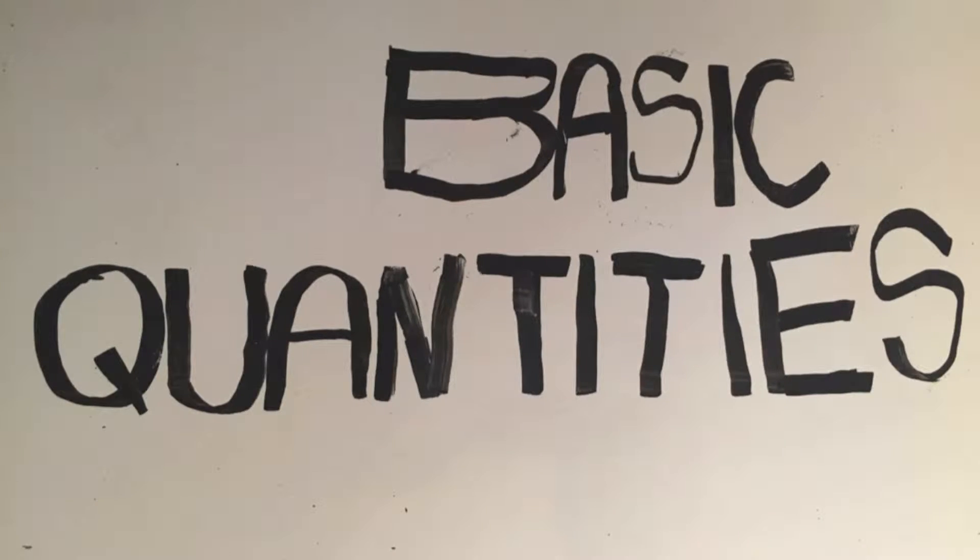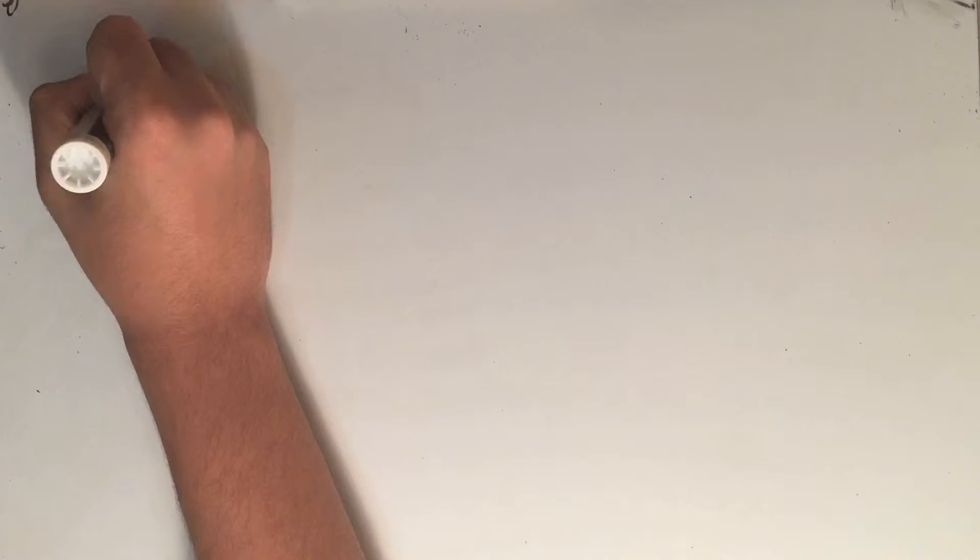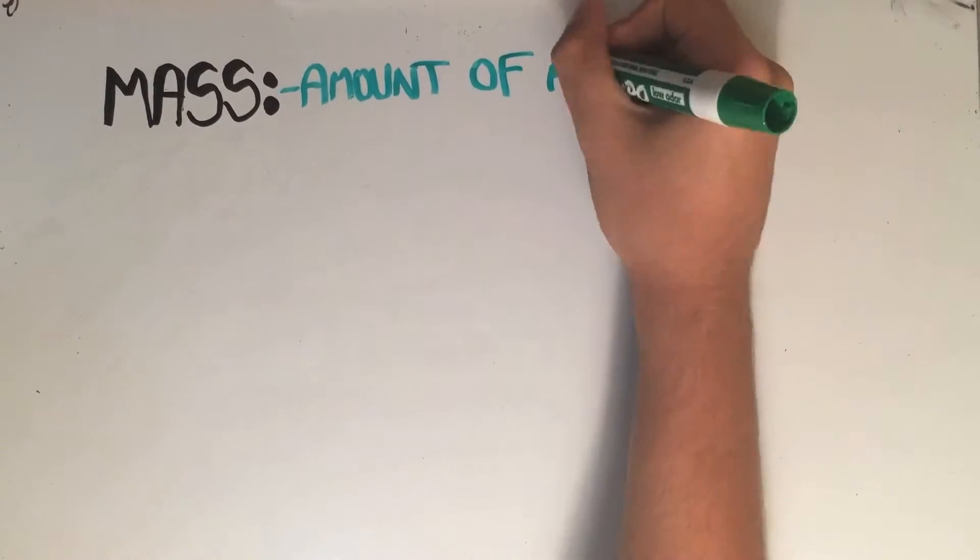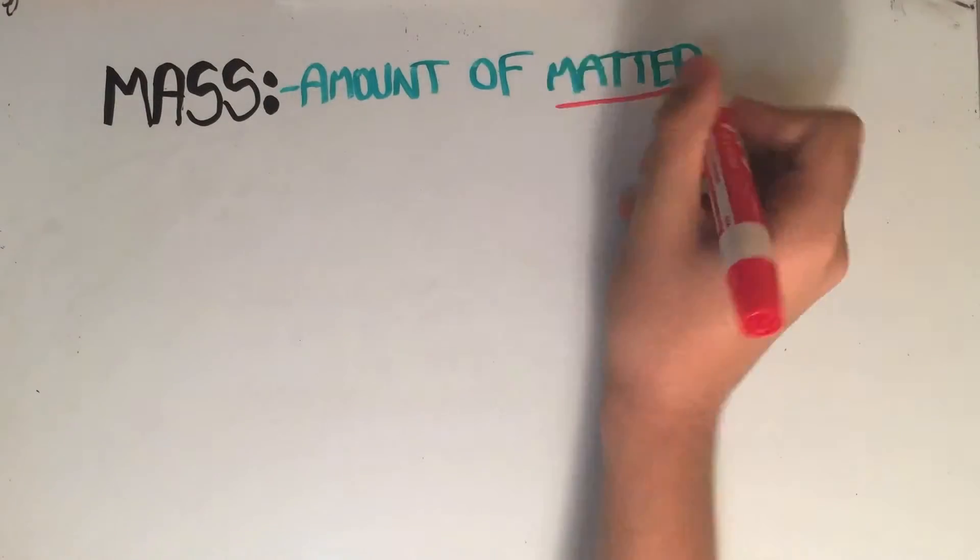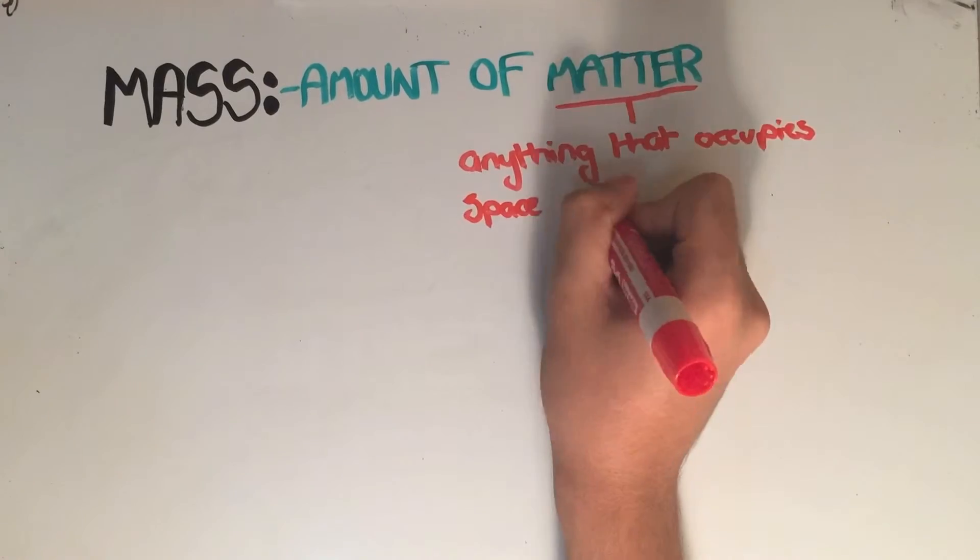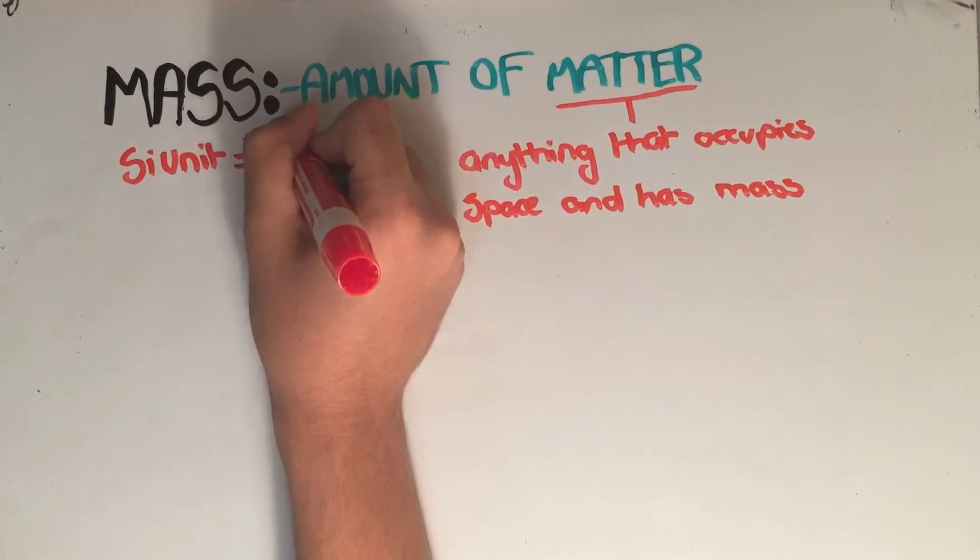Now we're going to be talking about some basic quantities. The first quantity we're going to be talking about is mass. Mass is a measure of the amount of matter in a substance. Matter refers to anything with mass that occupies space. The unit of mass is grams.